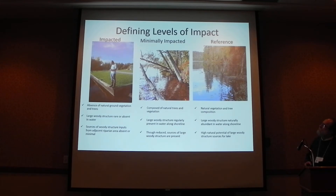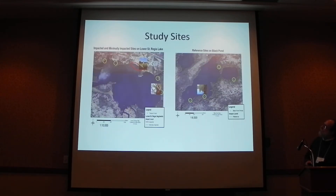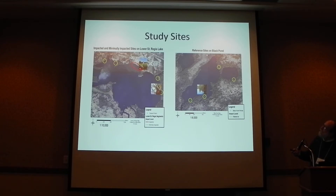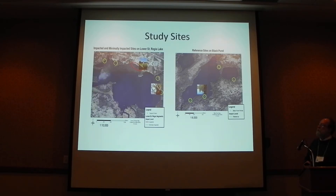The impacted and minimally impacted sites were on Lower St. Regis Lake. There's a college campus right there, and the greatest shoreline impairment is along that part of the lake. We selected minimally impacted sites on the downwind side of the lake, because we know wind can have a big influence. Our reference sites were located on Black Pond. We realized this wasn't perfect, but it was a start, and we may expand to other sites in the future.